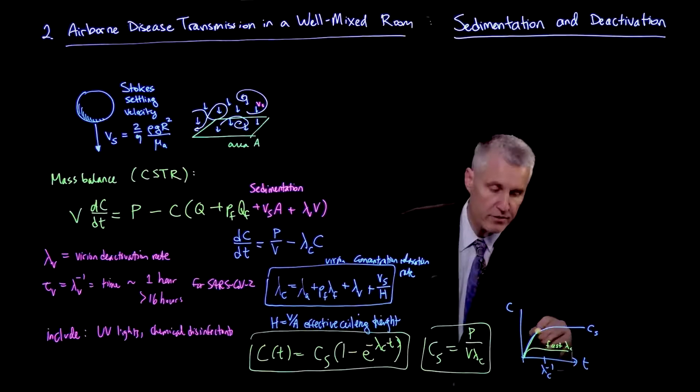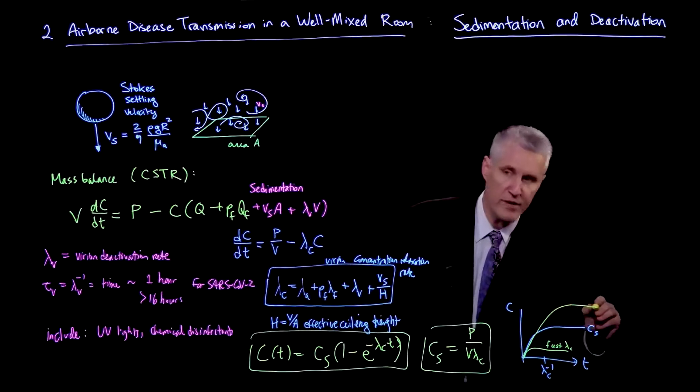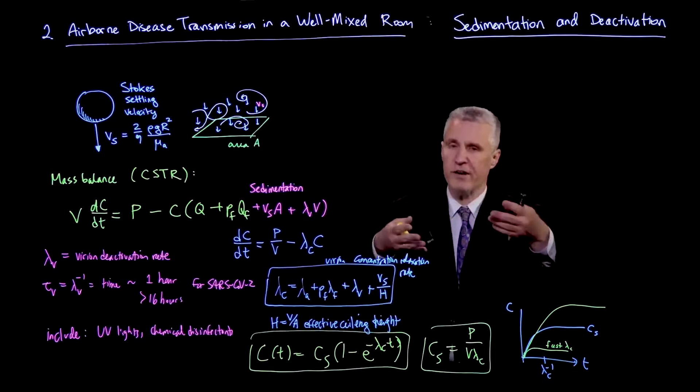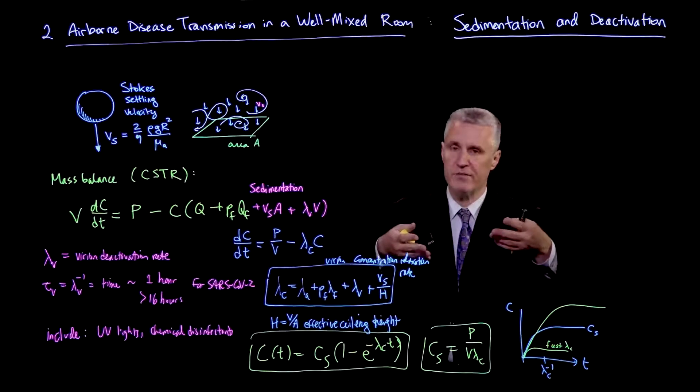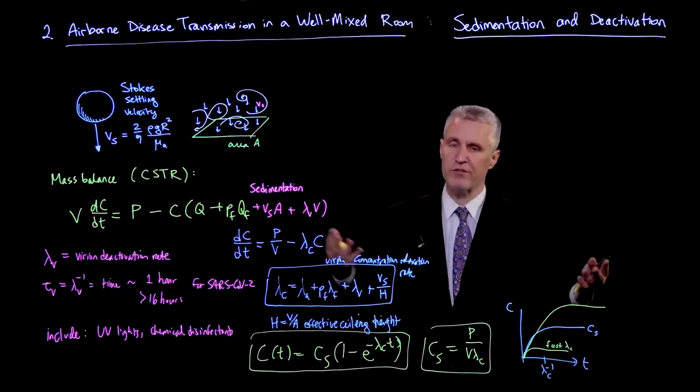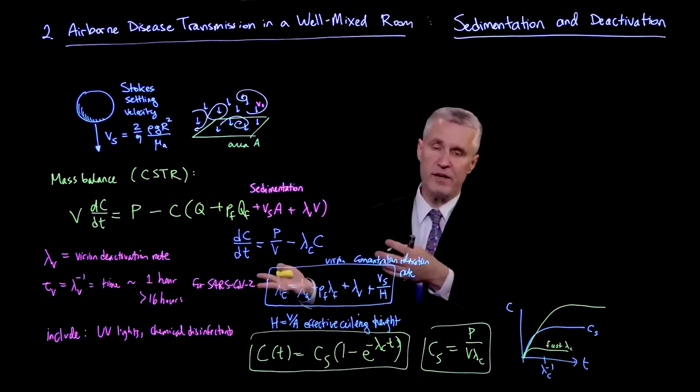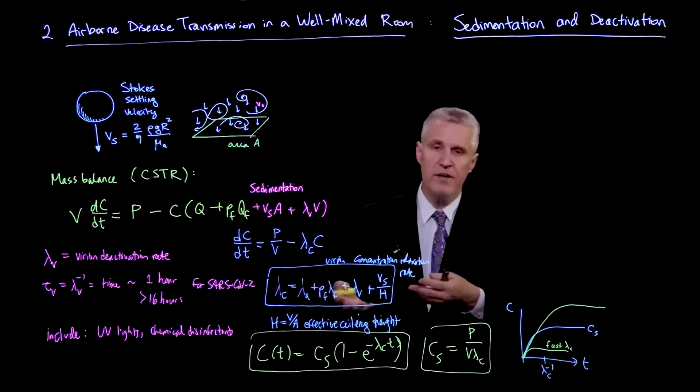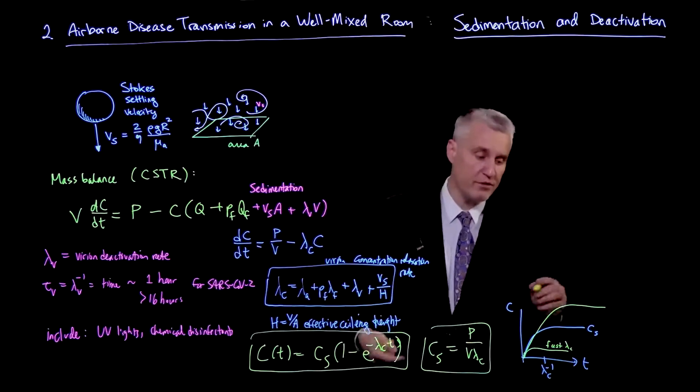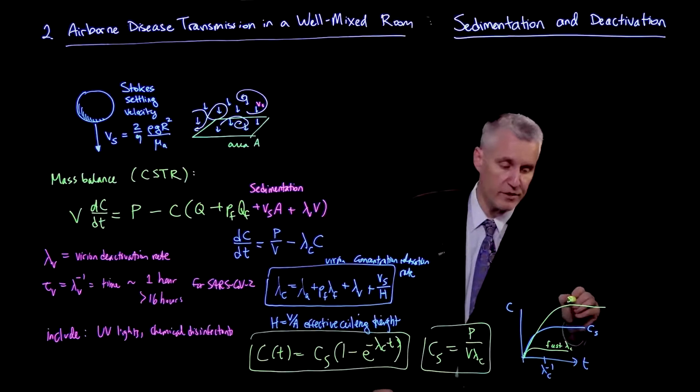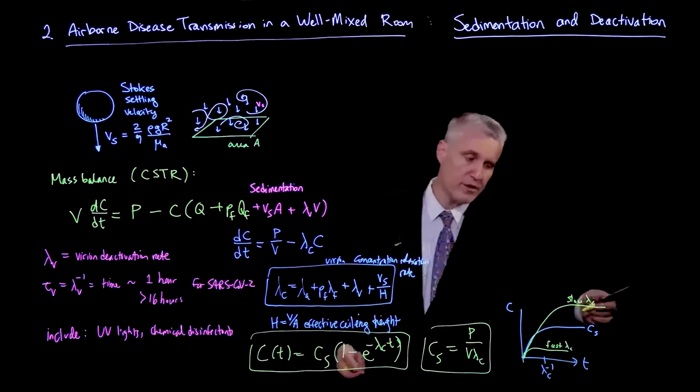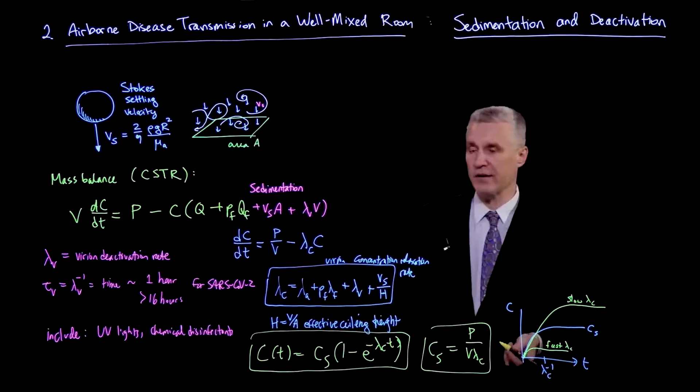On the other hand, if I have slow relaxation, because any of these processes here are slow, then I get something which relaxes much more slowly and ends up at a higher value. So if someone is breathing infectious air out, and there's only very slow processes in the room which are removing that infectious air, then it's slow to build up, but it keeps building and building until it finally saturates.